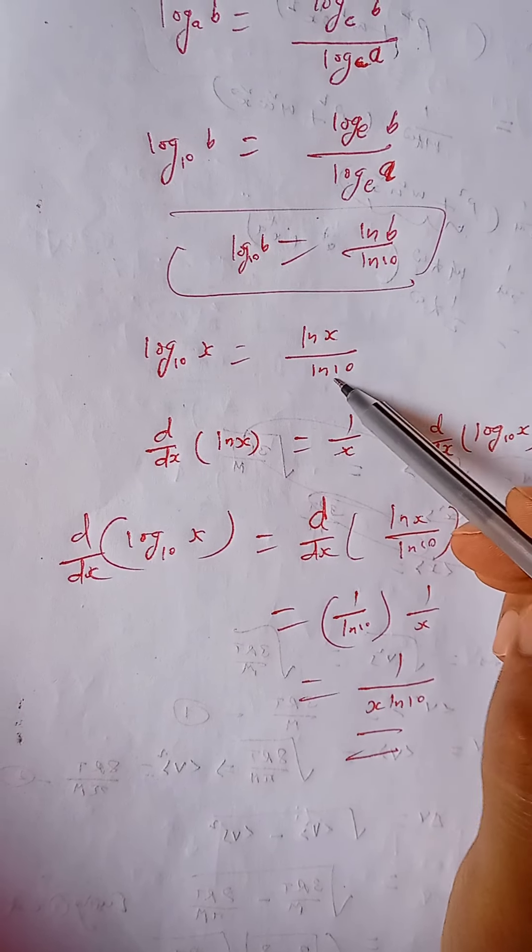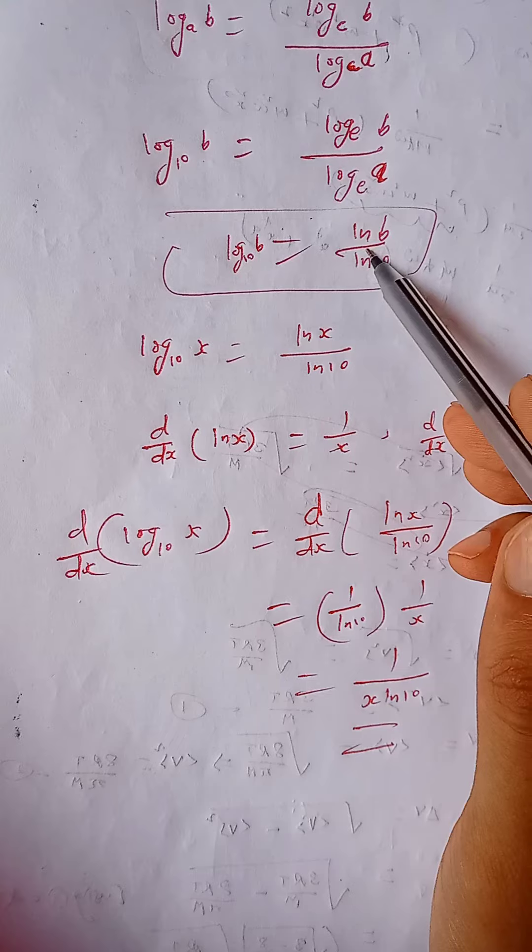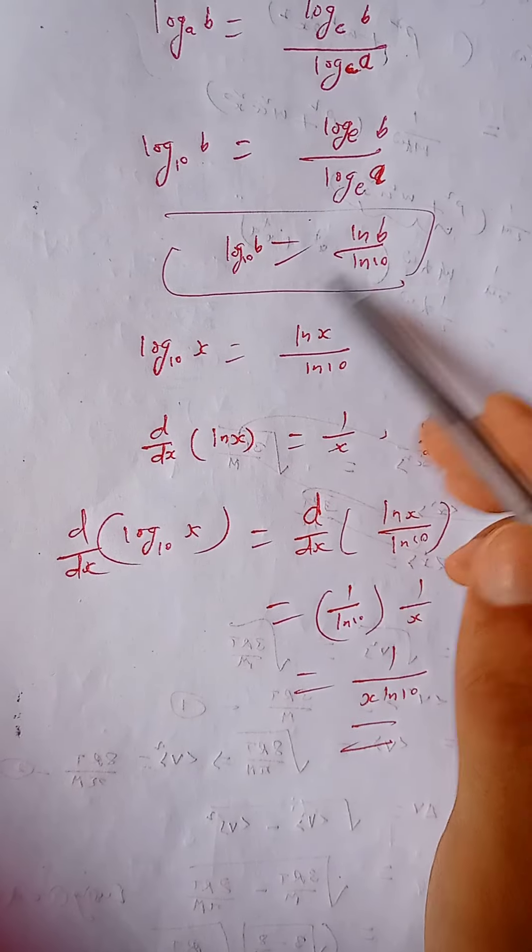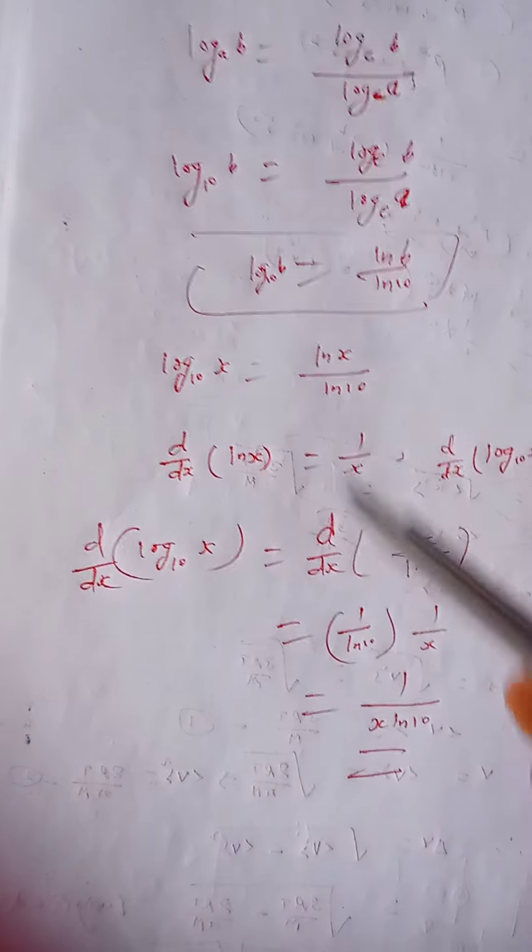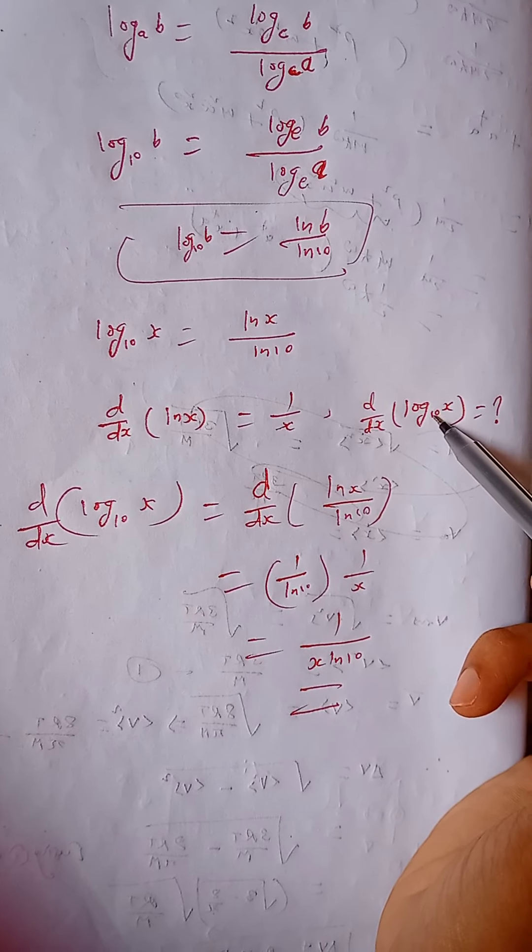Okay, so now log 10 of x is ln x by ln 10. We are replacing b by x because we are going to take its derivative with respect to x. And this is our original question: what is the derivative of log of base 10 x?